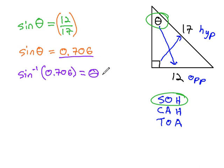The inverse sine of 0.706 is, after rounding, about 45. We'll call it a 45 degree angle is equal to theta.